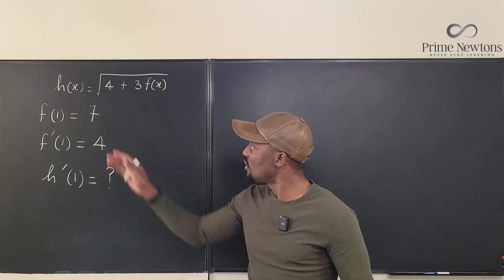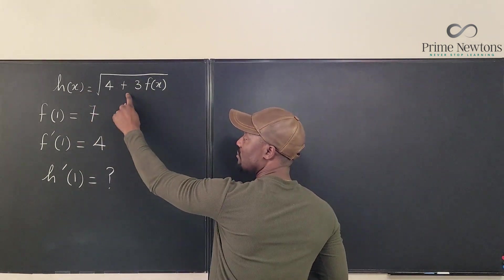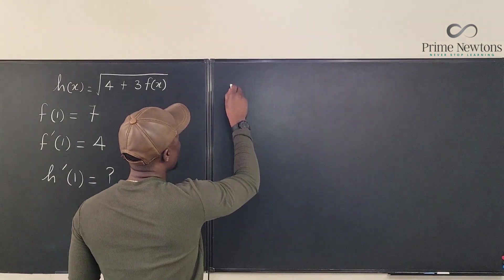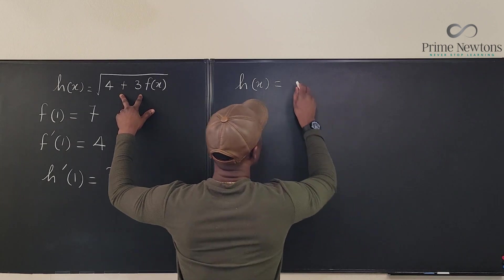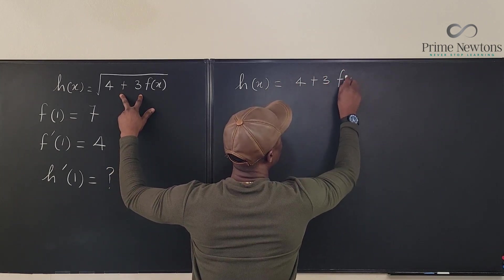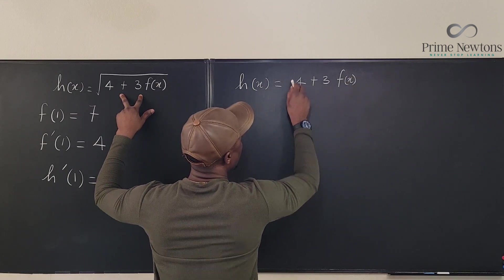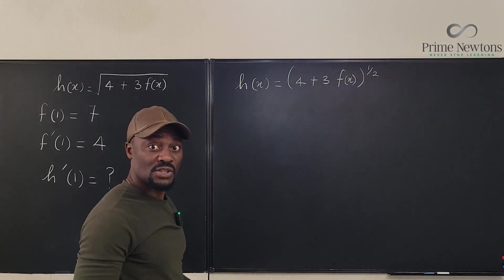So our first move is to differentiate this, and in order to differentiate this I would rather rewrite this. So we go h(x) is what is under the square root sign, 4 plus 3 times the function 3f, and we're going to raise it to power 1/2. So now we're going to differentiate.